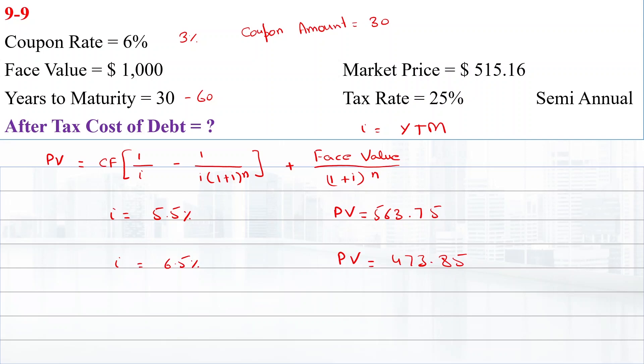$473.85 is less than $515.16, and $563.75 is higher than $515.16. The lower rate is IL with present value PVL, the higher rate is IH with present value PVH, and the actual present value is PVA.